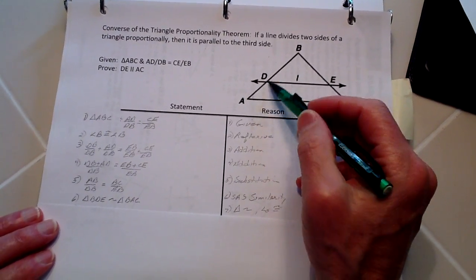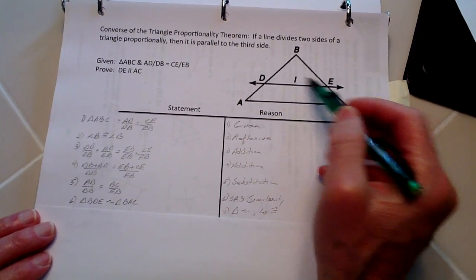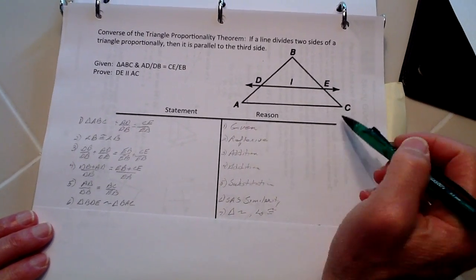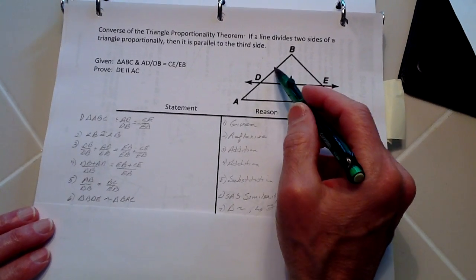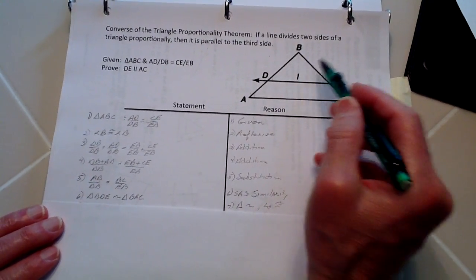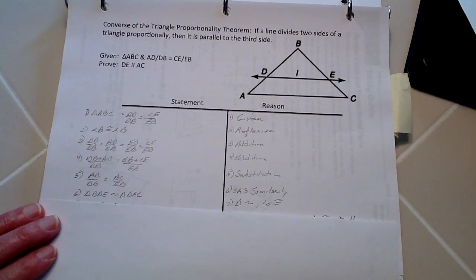And therefore, this triangle of BDE is going to be similar to BAC because of side, here's the angle, side, angle, side. And we've already shown the proportionality there.